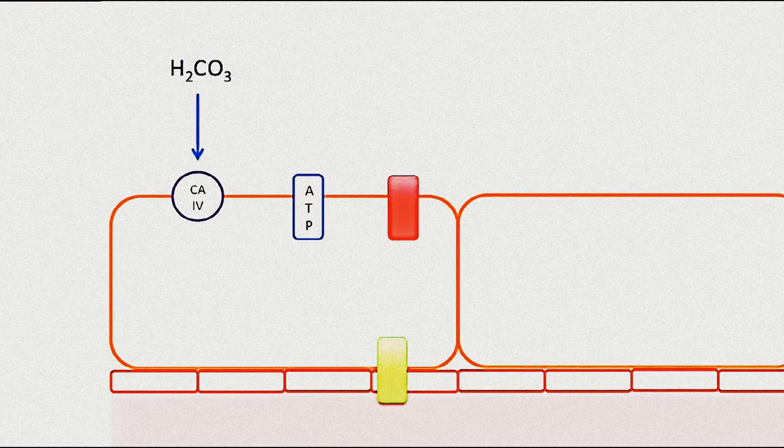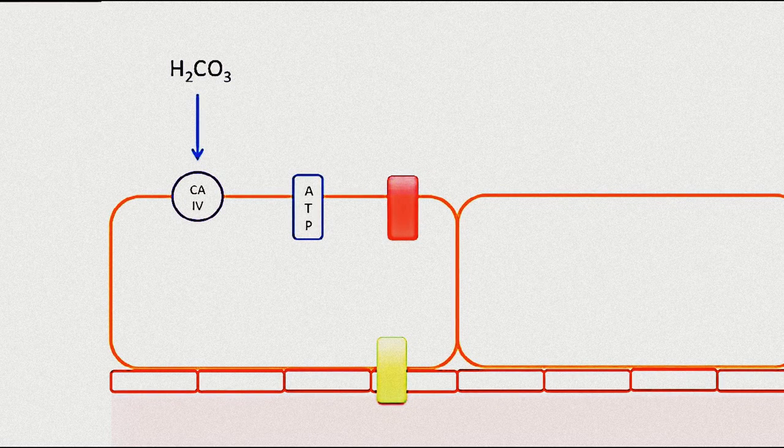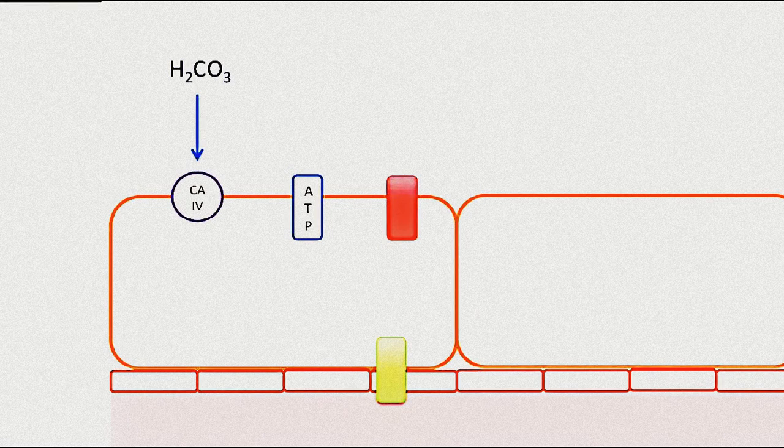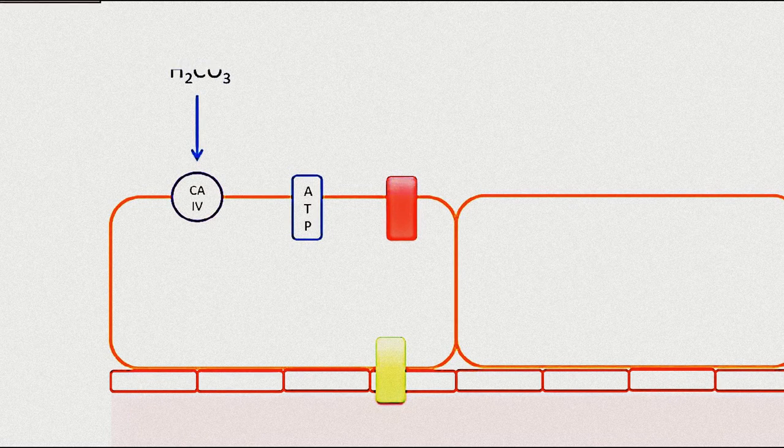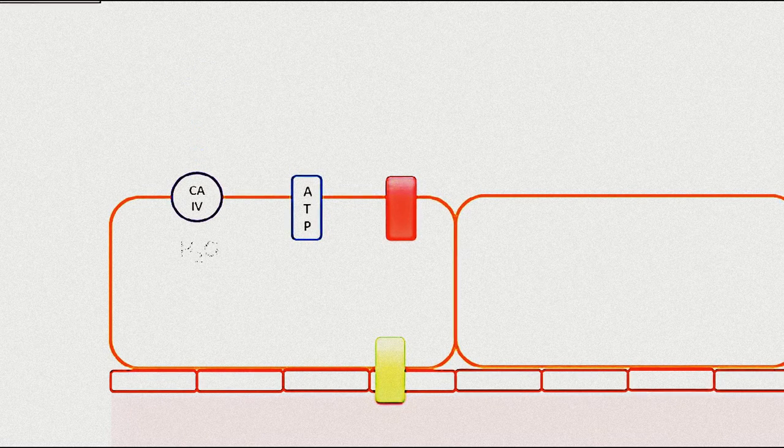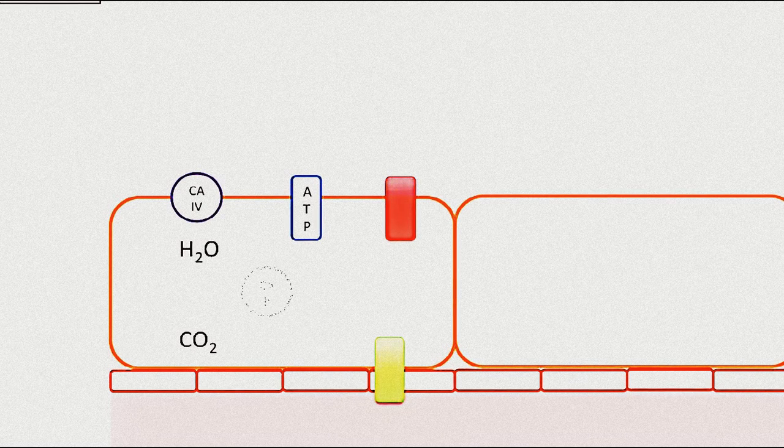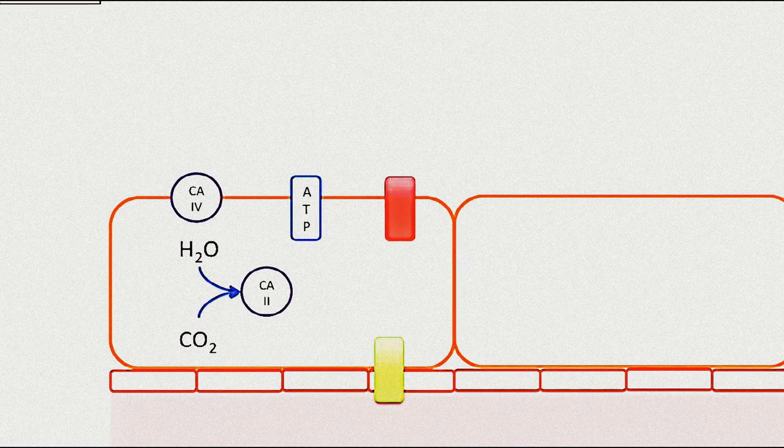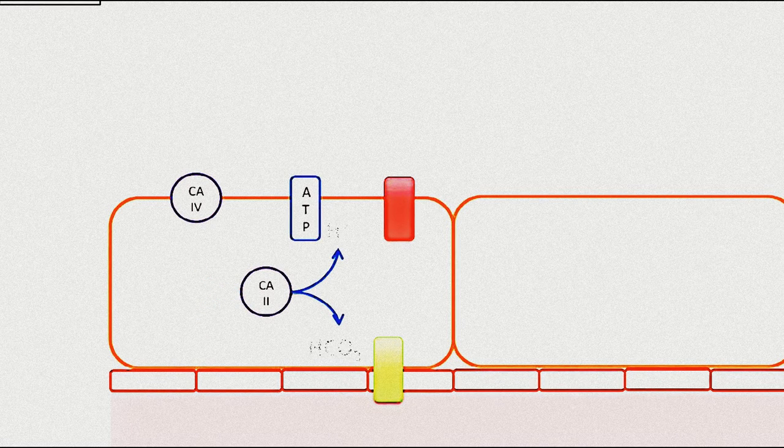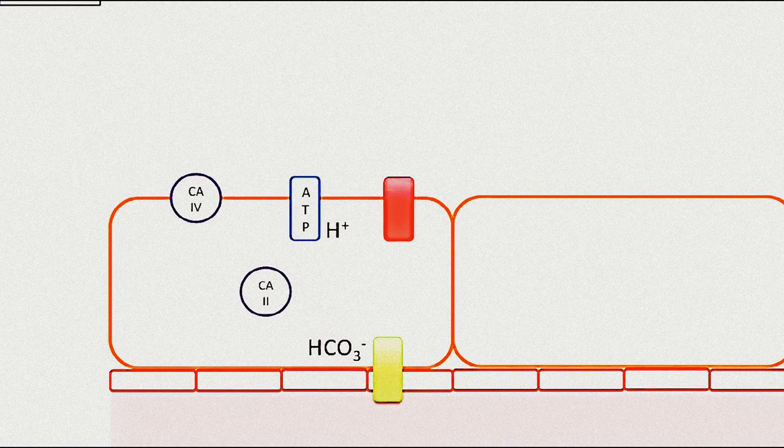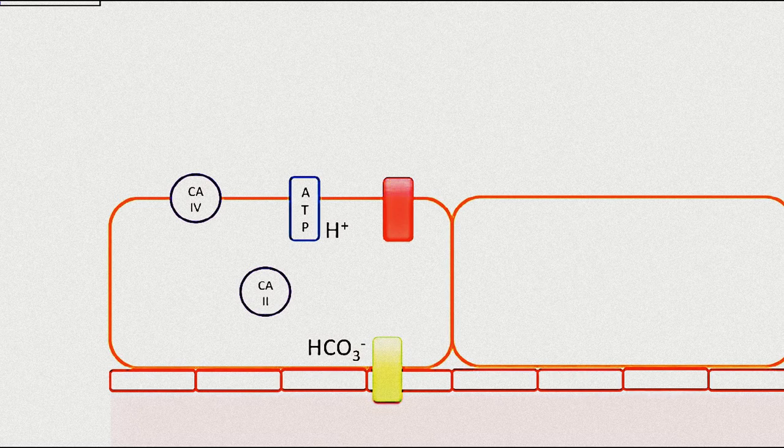When carbonic acid comes into contact with this, it's split up into water and carbon dioxide. That then joins up with carbonic anhydrase 2 inside the cell and dissociates back into protons and bicarbonate.